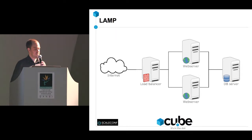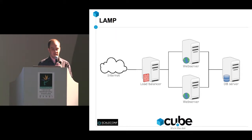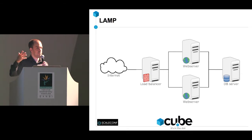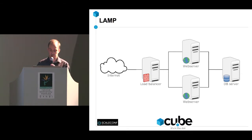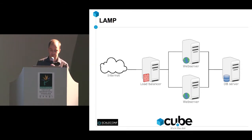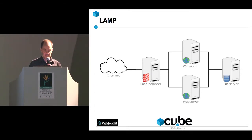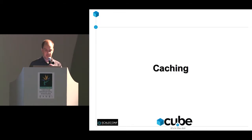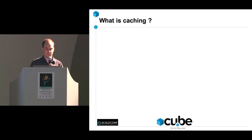We're going to start off with an architecture that most of us are probably familiar with: the LAMP architecture — Linux, Apache, MySQL, PHP. You could have a setup with a database server, two web servers, a load balancer in front, and so on. Let's start by talking about caching.